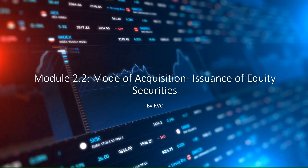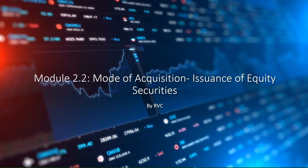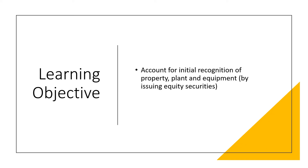In the mode of acquisition, this time using issuance of equity securities in acquiring long-term assets or property, plant, and equipment. Our learning objective is the same as from the previous module: to account for initial recognition of property, plant, and equipment by issuing equity securities. From the previous module, we studied the mode of acquisition by deferred payment plans, but this time by issuing equity securities.